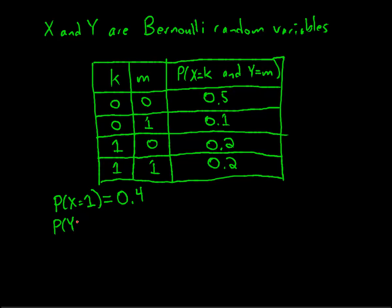Similarly, the probability that Y is equal to 1 is the sum of these probabilities where m is 1. So I've got 0.1 plus 0.2 is 0.3.